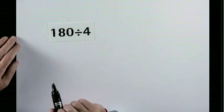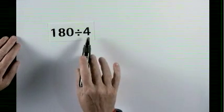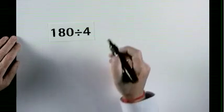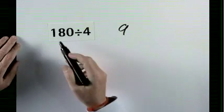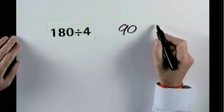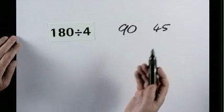180 divide by 4. Why not divide by 2 and then divide by 2? Half of 18 is 9, so half of 180 is 90, and half of 90 is 45.